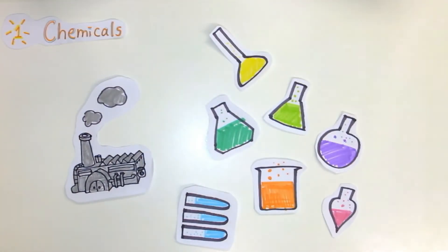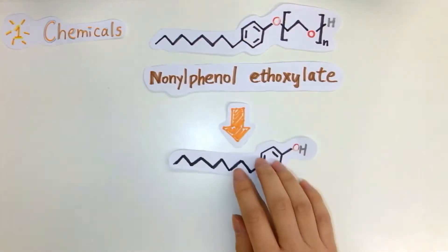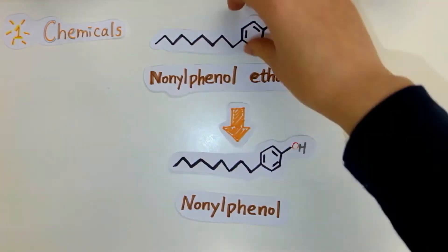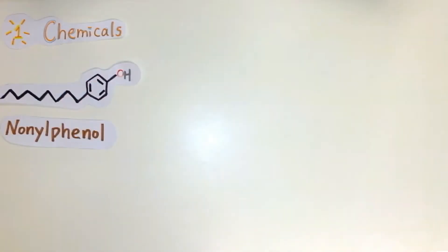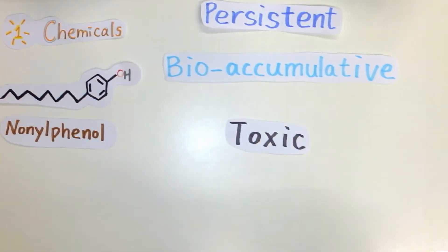Three kinds of hazardous chemicals are to be introduced. Nonylphenol ethoxylates are used in several processes of textile manufacturing. It will degrade to nonylphenol in environments. Nonylphenol is persistent, bioaccumulative, and toxic, and can act as a hormone disruptor.